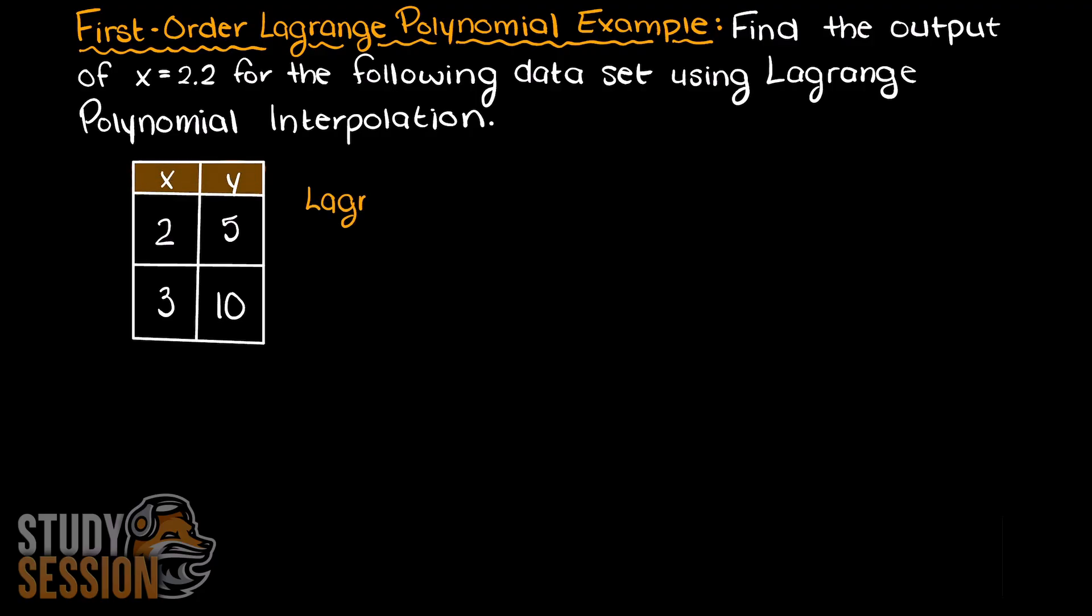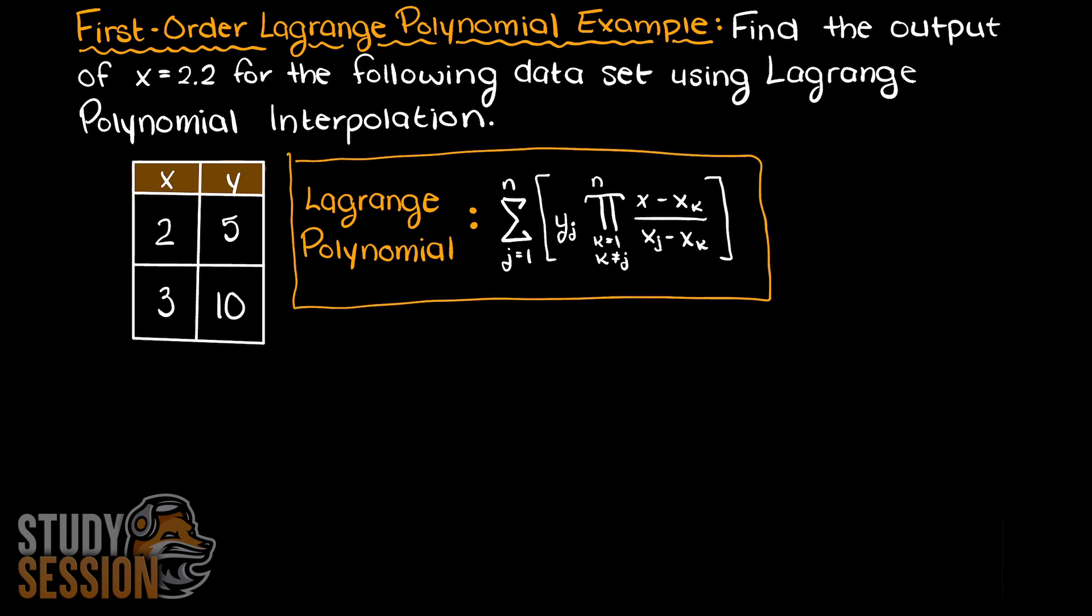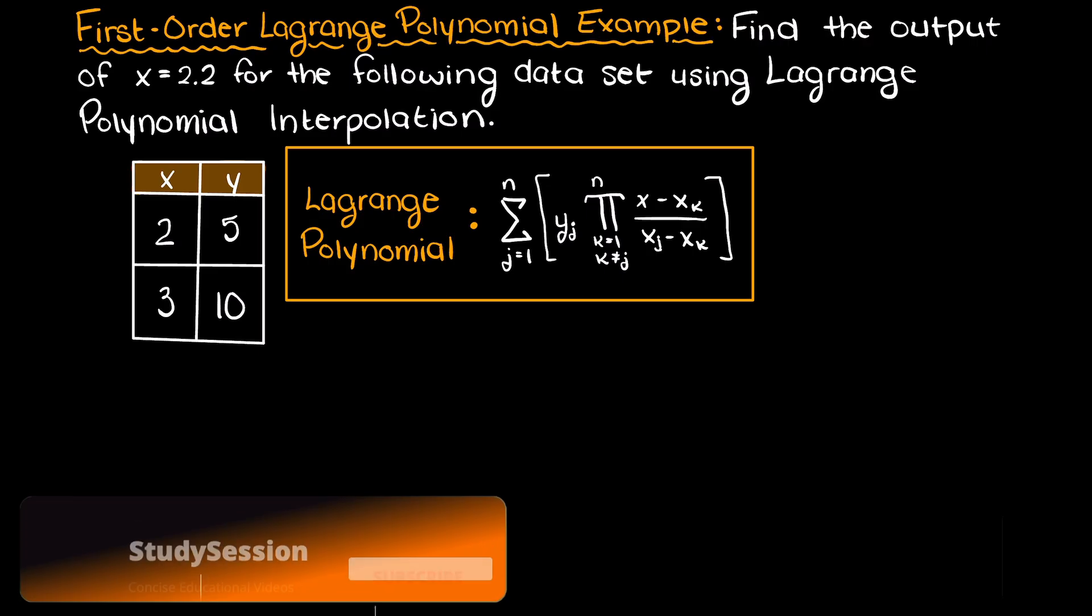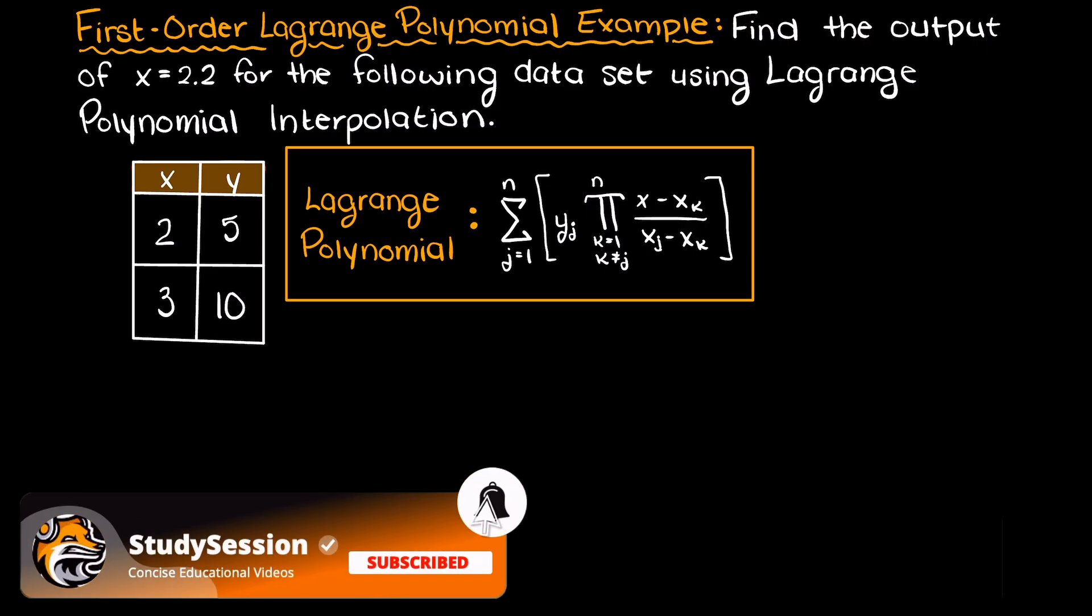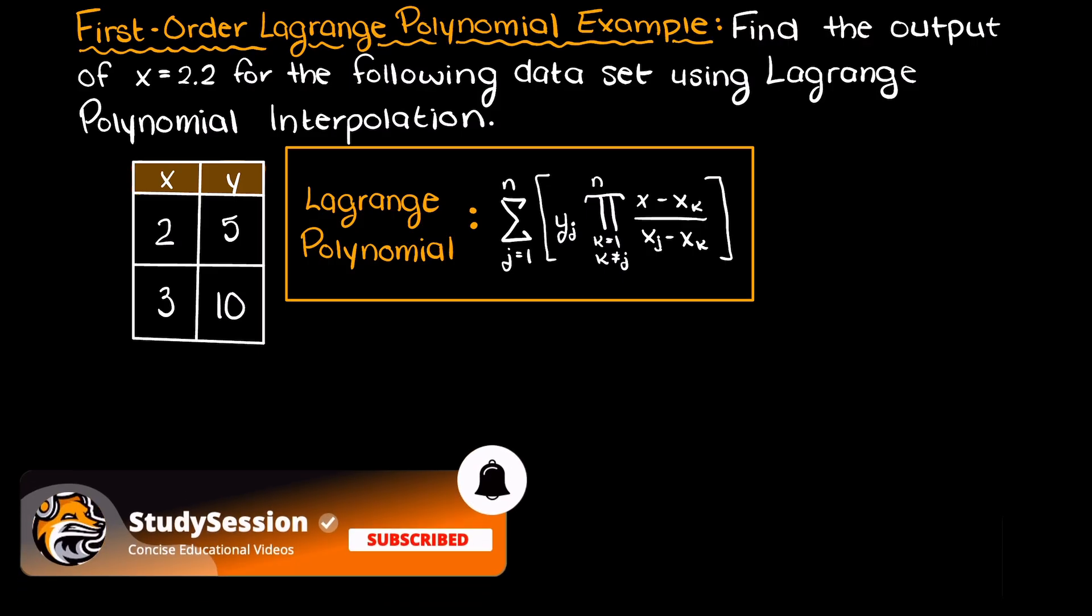I am just going to take a second and write out the general formula for any order Lagrange polynomial here. If you have seen our previous video on Lagrange polynomials, we talked about the degree of Lagrange polynomials. Since we have two data points present we will have two terms in our first order Lagrange polynomial. Our order is our number of data points minus one. Now let's talk about how we solve this problem.